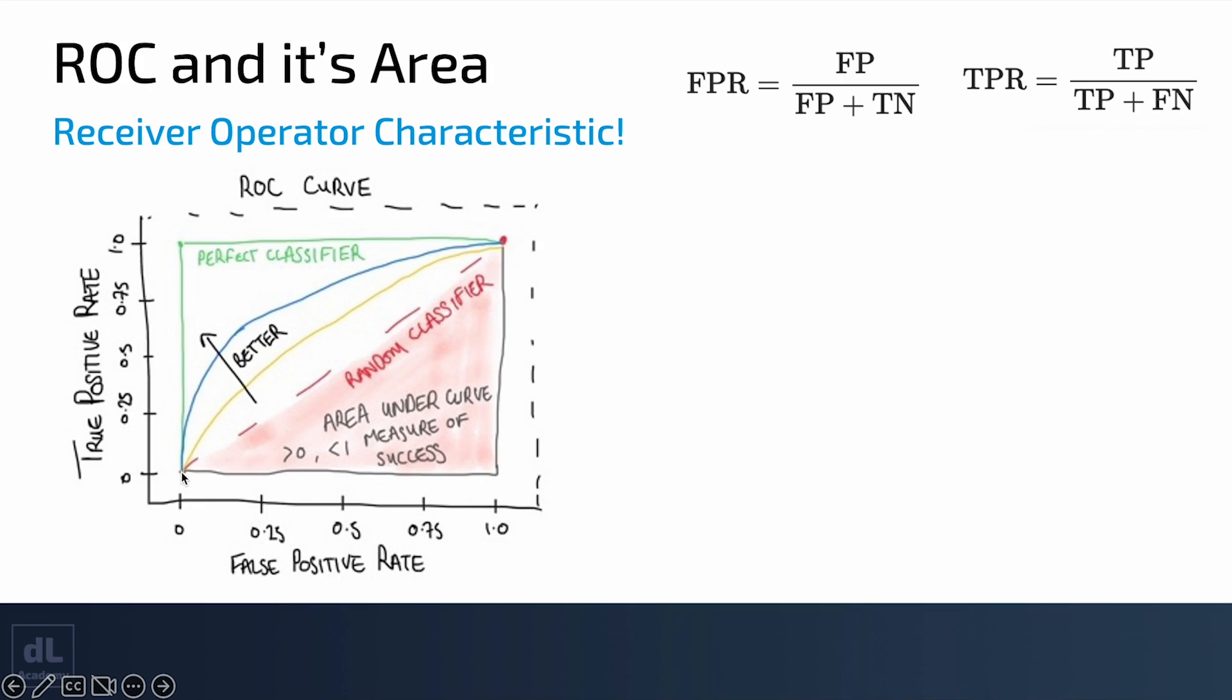As we lower that classification threshold, we allow more and more classification of true depending on the output of the prediction from the binary classifier, then this curve increases. Let's go to the other extreme end. When the classification threshold is 0, this thing always classifies everything as positive. The number of true negatives is 0, but also the number of false negatives is 0. This ends up being false positives divided by false positives, which is 1, and true positives divided by true positives, which is also 1. So this curve for a 0 threshold goes to 1,1.